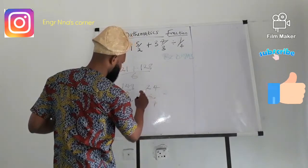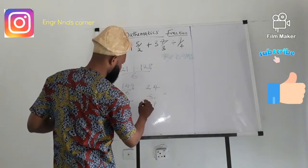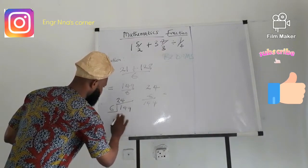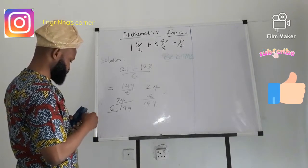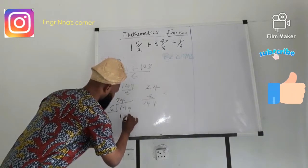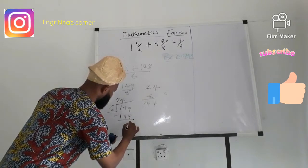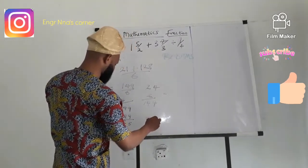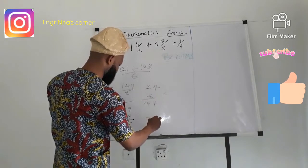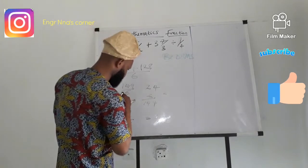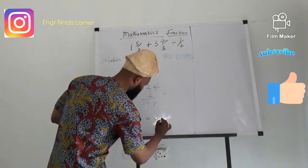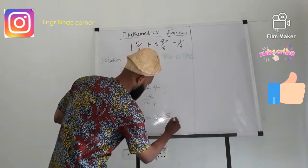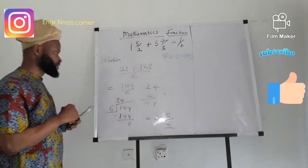This would give us 14. So here is the remainder of 5. So the answer here becomes 24 whole number 5 over 6 to be our answer.